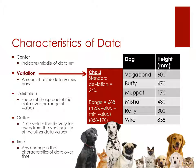Variation refers to the amount that the data values vary. In chapter three, we'll be looking at standard deviation — that is how far the data spreads out around the mean. We'll also be taking a look at range. For range, we take the maximum value and subtract the minimum value.